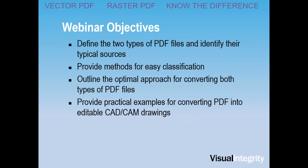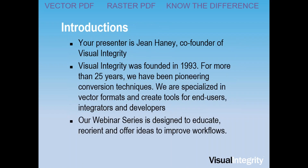The objectives of the webinar are to define the two types of PDF files and identify their typical sources. I'm going to give you a few different methods to easily classify them and outline the optimal approach for converting both raster and vector PDF files. Then we'll look at some practical examples towards the end. Visual Integrity was founded in 1993. For more than 25 years, we've been pioneering conversion techniques, specialized in vector formats, and we create tools for end users, integrators, as well as SDKs for developers.